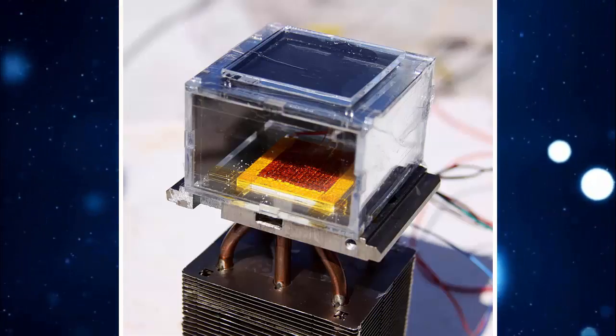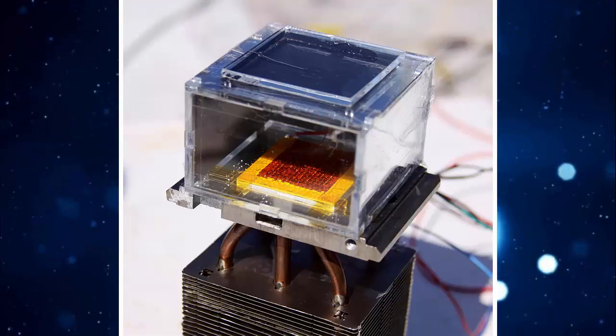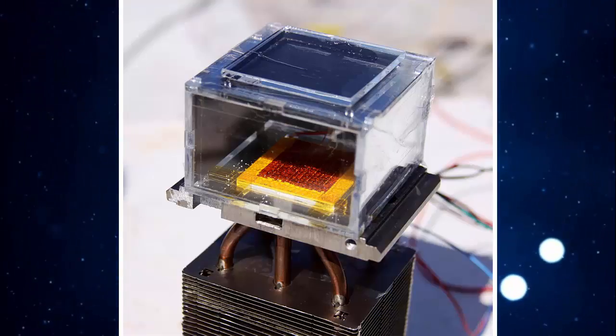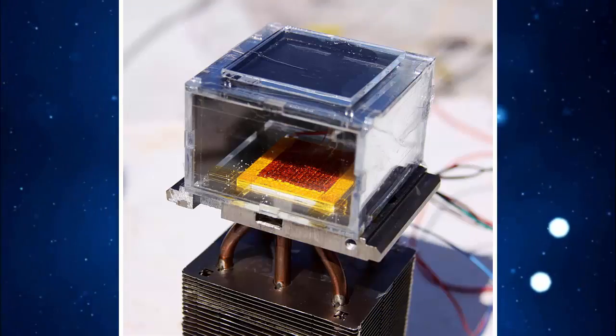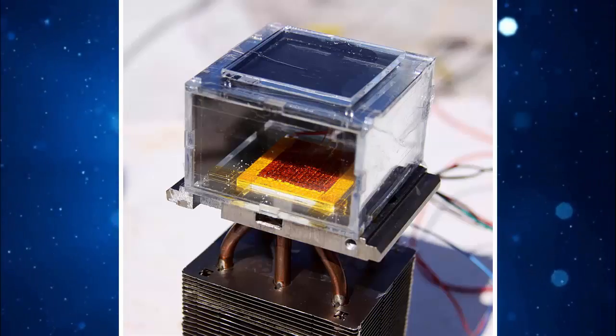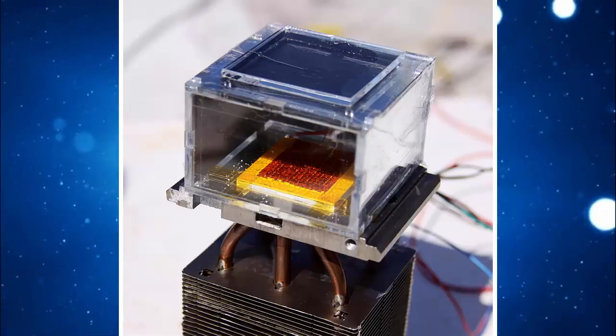That future may be around the corner, with a demonstration this week of a water harvester that uses only ambient sunlight to pull liters of water out of the air each day, in conditions as low as 20% humidity, a level common in arid areas.